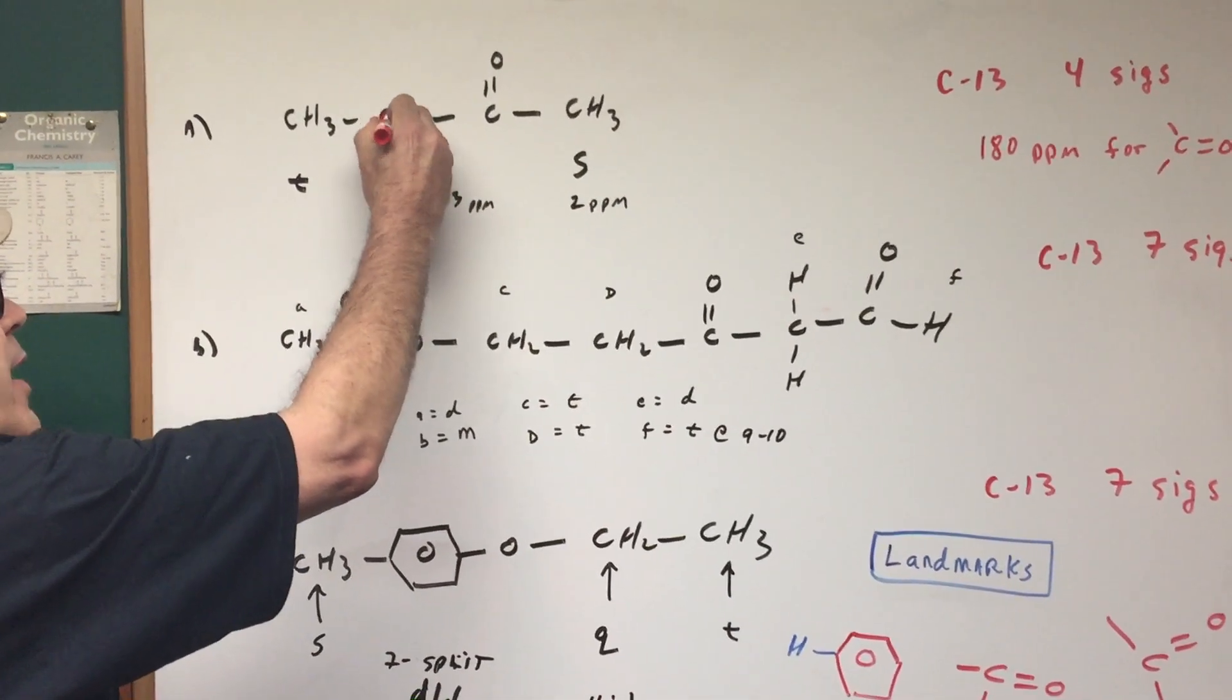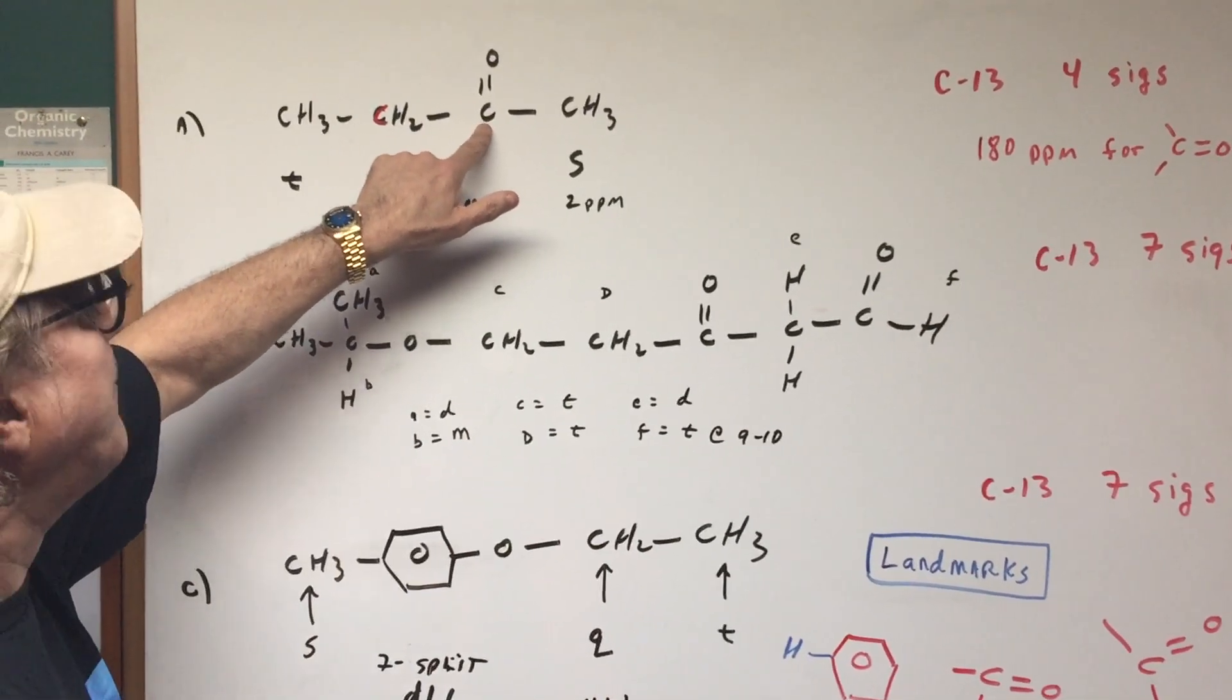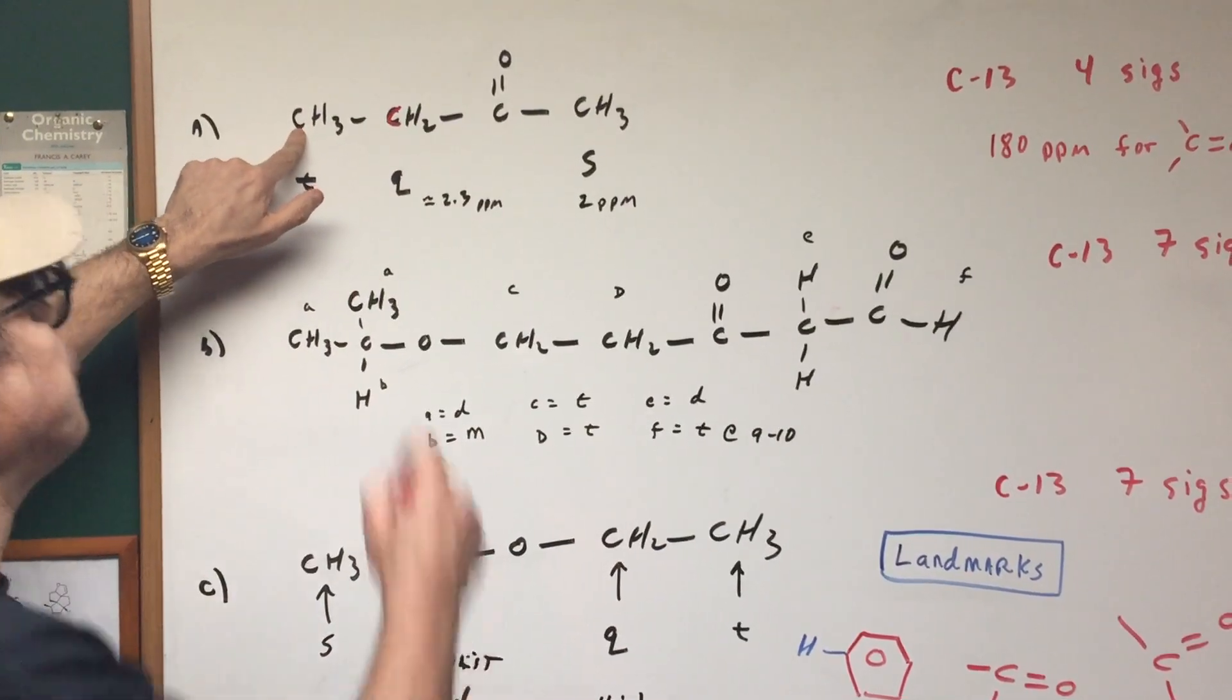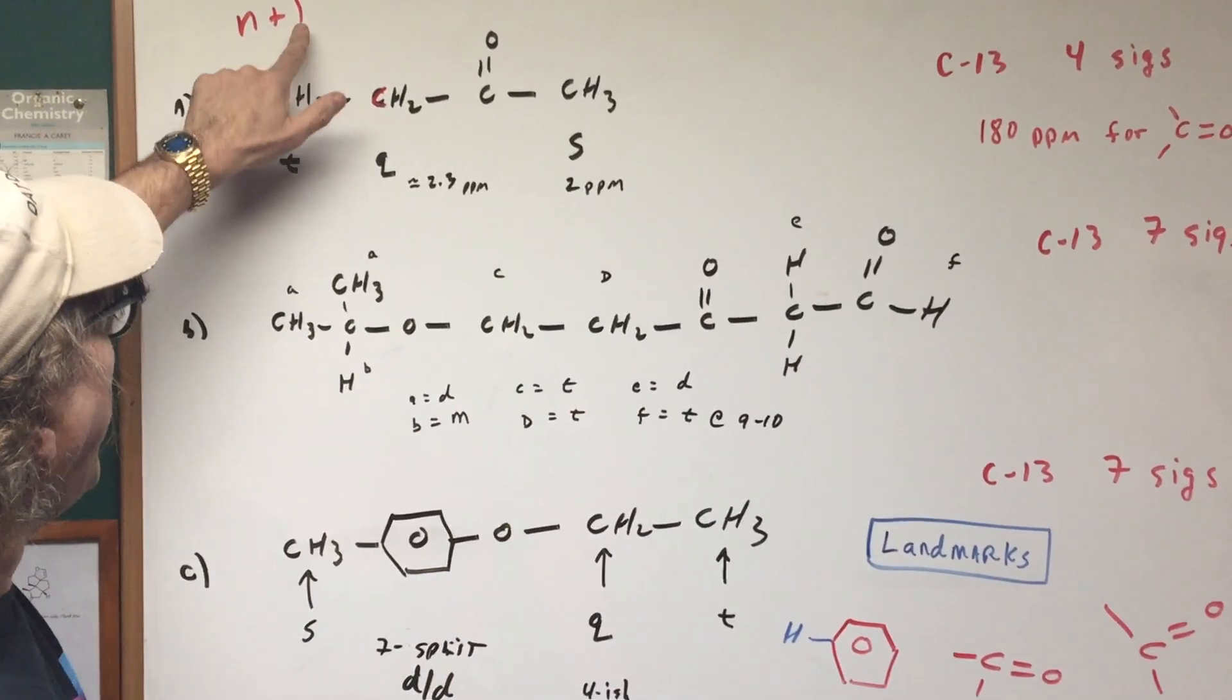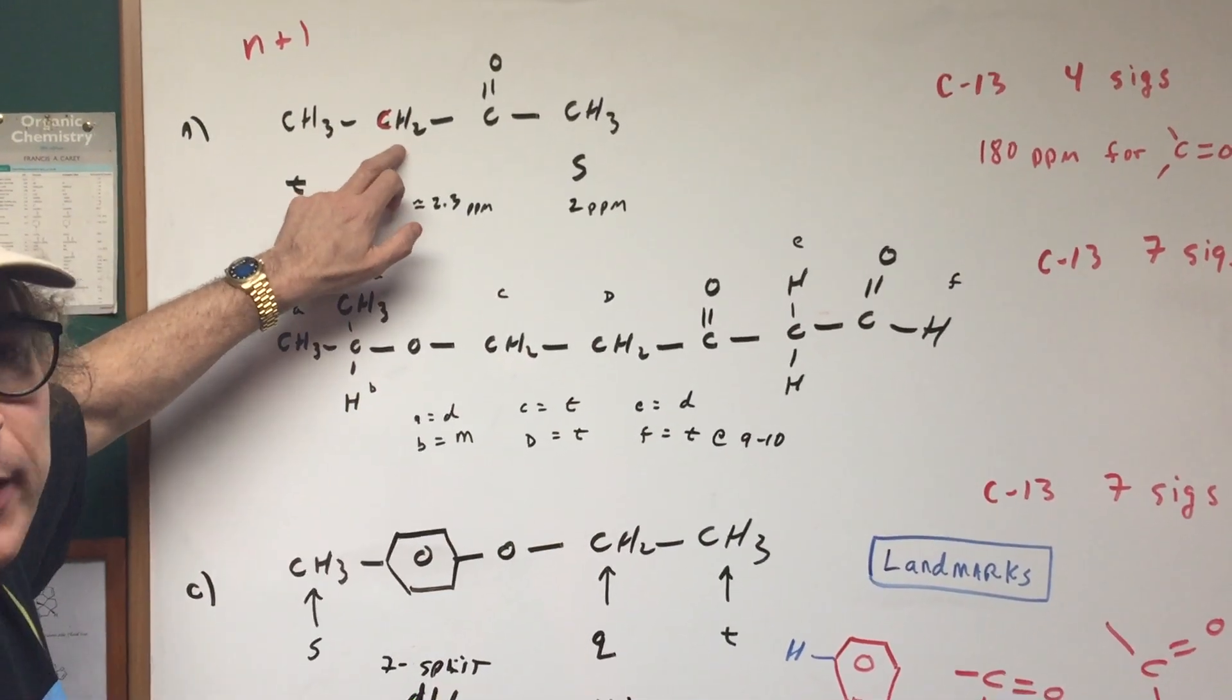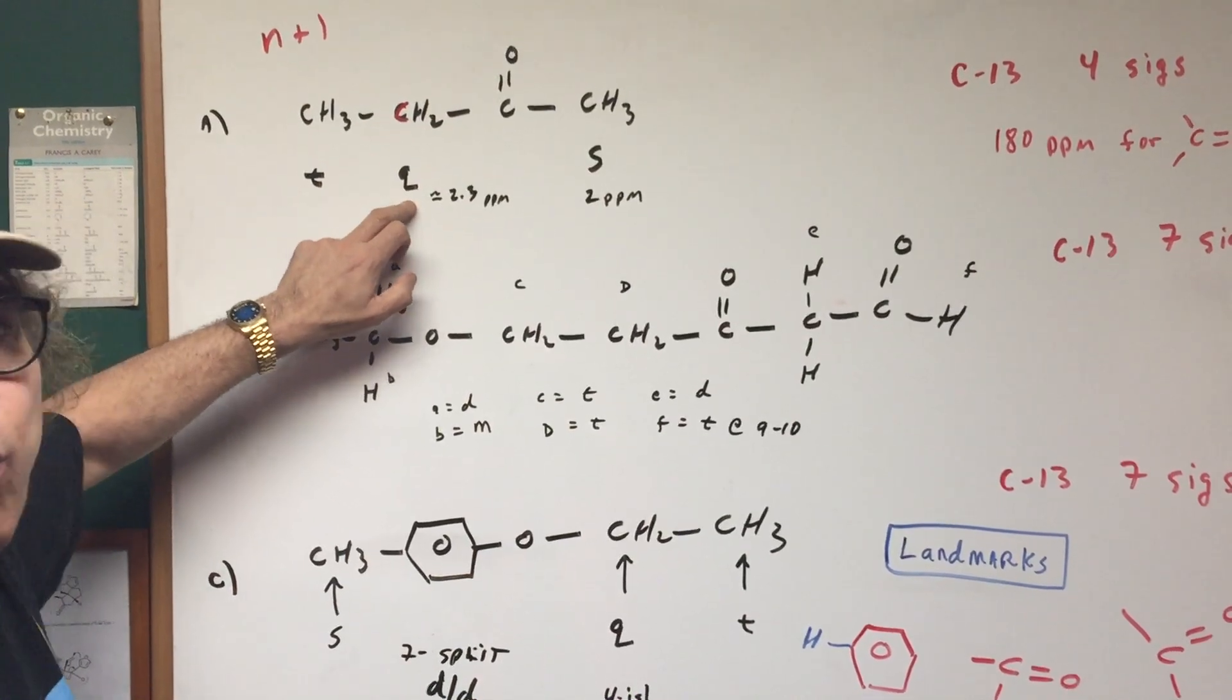If you go to this carbon right here, you jump to the right of you, there's no carbons. You jump to the left of you and that carbon has three and you use what we call the N plus one rule. You add three, which is these three, add one and that would give you four. So that means those H's, those two H's would end up giving a quartet.